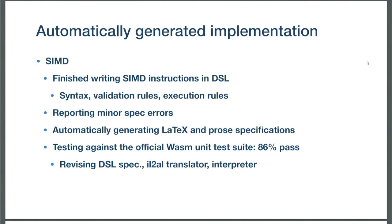The current status is that they are done with writing the semantics of SIMD instructions — syntax, validation, and execution, everything. They are reporting minor spec errors and getting approval. They also automatically generated LaTeX and prose specifications for SIMD. With the official Wasm unit test, 86% passes. The remaining 14% may be due to our way of describing the semantics — we may need to change this, but we'll see. The IL-to-AL translation and interpreter: whenever we have decision-making, we looked at the current Wasm specification and its way of describing the semantics and followed it.